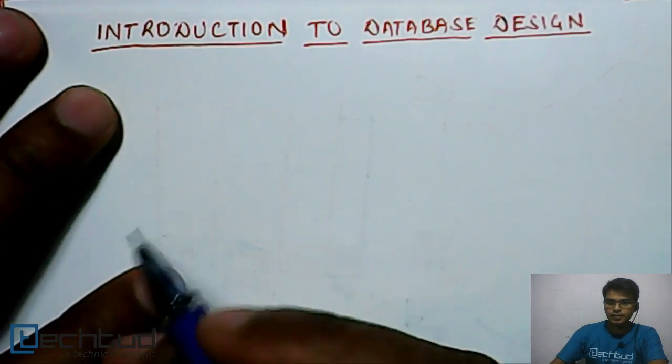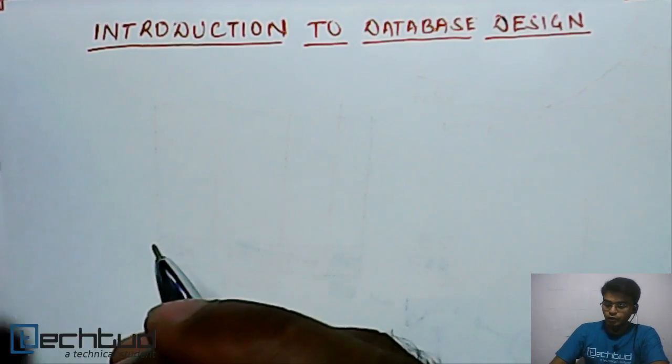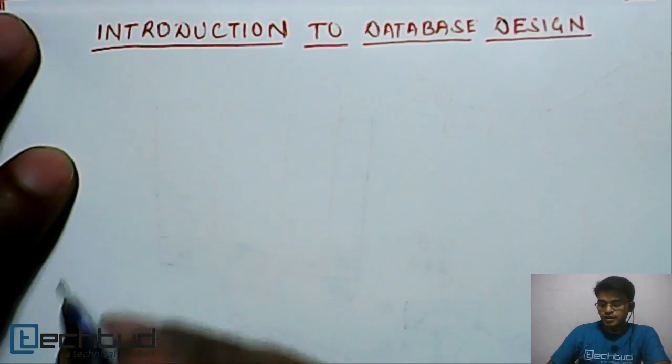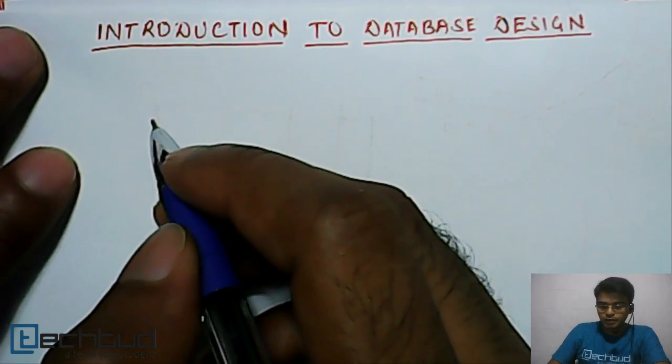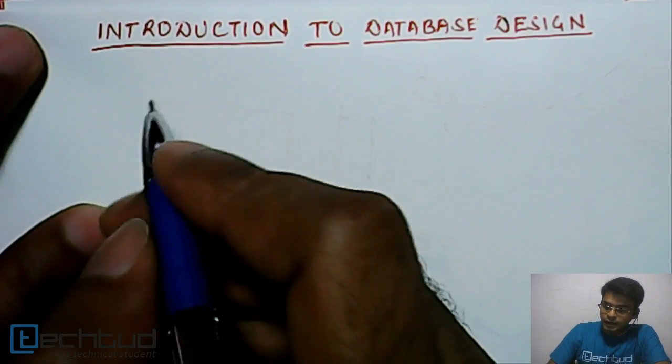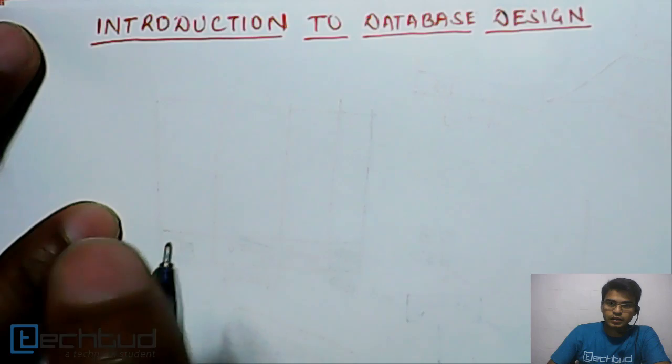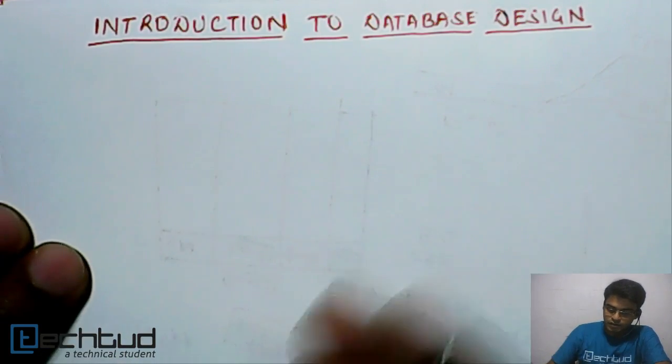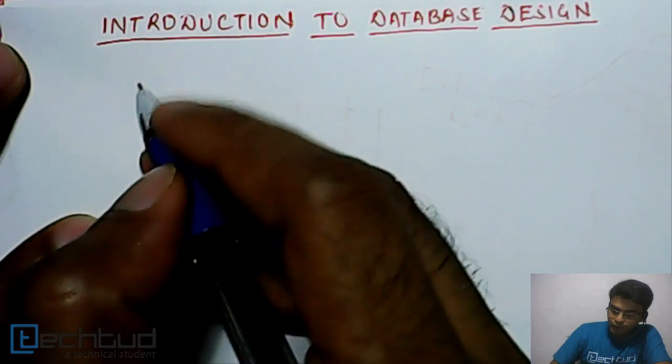The basic is how we go about designing a database. Basically we have two approaches. One is bottom-up, which is also called design by synthesis, and another one is top-down, which is called design by analysis. So let's understand the two approaches.